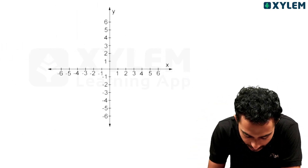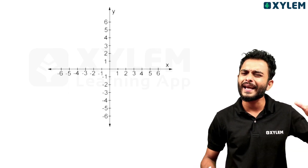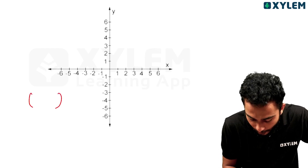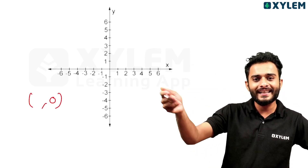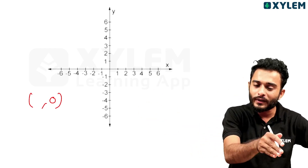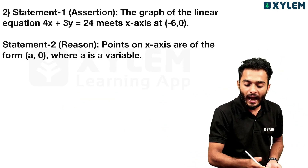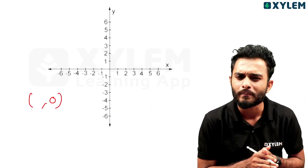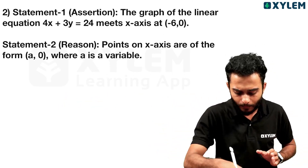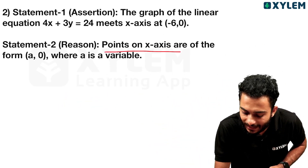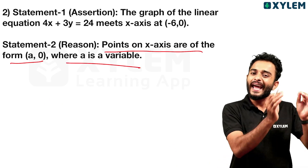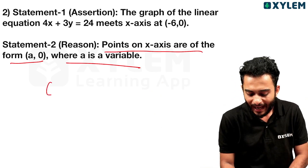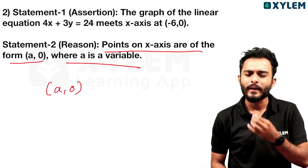Statement 2 we know — points on the x-axis are of the form (a, 0). Now x-axis points: the y-coordinate is 0. That's the y-coordinate — 0. The x-coordinate varies. That's the point and answer vary. Points on x-axis are of the form (a, 0) where a is a variable. Generally, that's how we represent it. A is a letter — that means it is (a, 0).